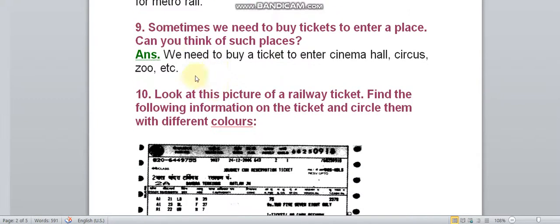Question 9: Sometimes we need to buy tickets to enter a place. Can you think of such places? Answer: We need to buy a ticket to enter cinema hall, circus, zoo etc.